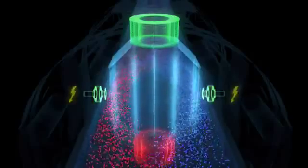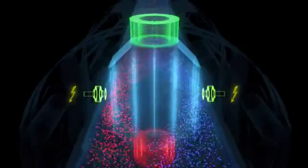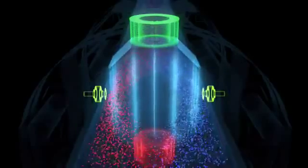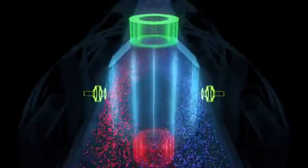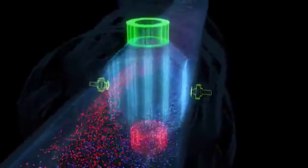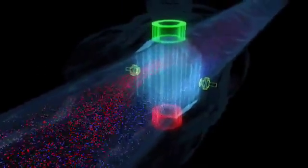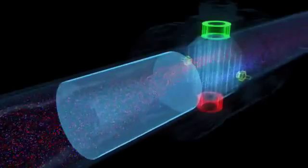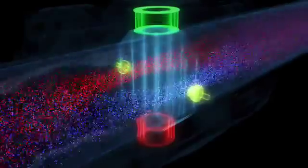Now, an electrical voltage forms, which is detected and measured by the two electrodes. This voltage is directly proportional to the flow velocity in the pipeline. Together with the known tube cross-section, the flow volume can then be calculated. The greater the flow velocity, and thus the separation of the charged particles, the greater the electrical voltage between the electrodes.